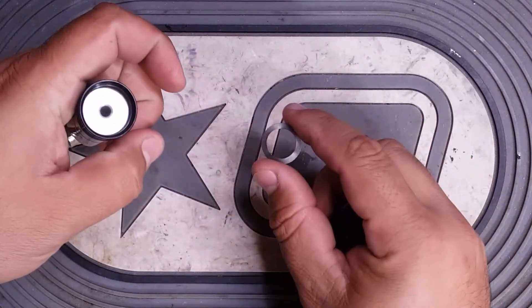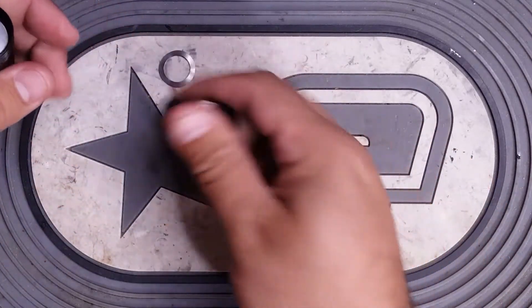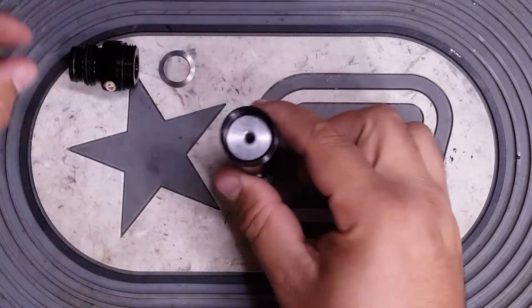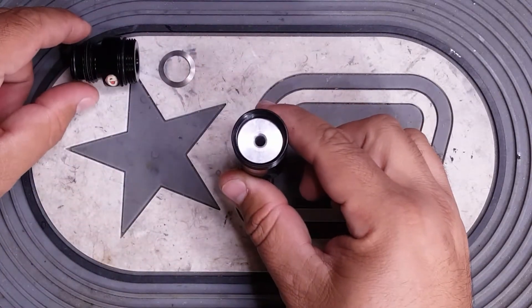Inside usually will be a small wave spring, and then the piston underneath it, as you can see. Set that aside there.